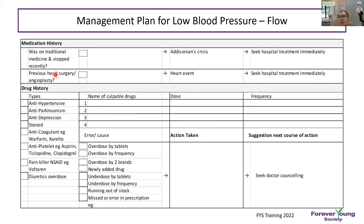Check medical history — including traditional medicine and over-the-counter medicine. Traditional medicines like TCM often contain steroids; if patients have been taking them for months and suddenly stop, it can cause withdrawal syndrome, Addisonian crisis, and low blood pressure. Any previous heart surgery or angioplasty makes a cardiac event more likely as a cause of low blood pressure.